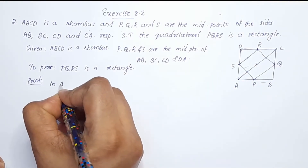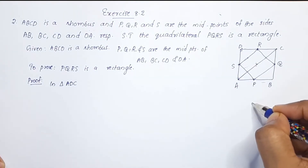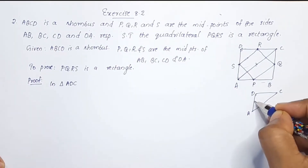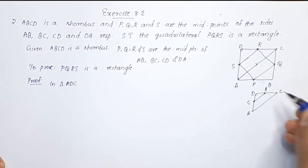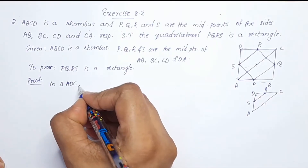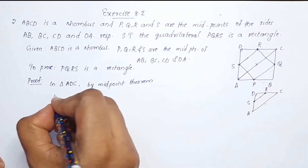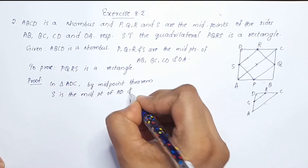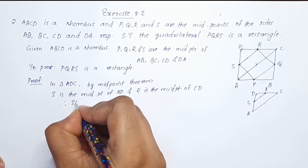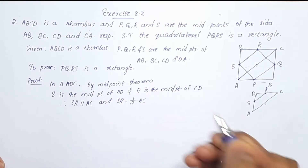In triangle ADC — this is the triangle we choose — S and R are midpoints. SR is parallel to AC, and SR is equal to half AC. In triangle ADC, by the midpoint theorem, S is the midpoint of AD and R is the midpoint of CD. Therefore SR is parallel to AC and SR is equal to half AC.